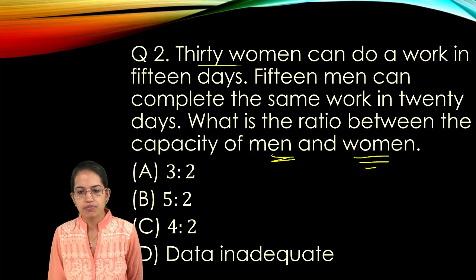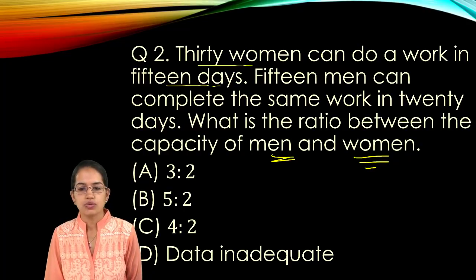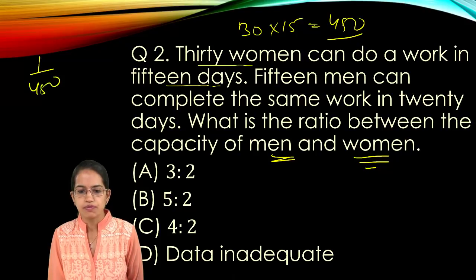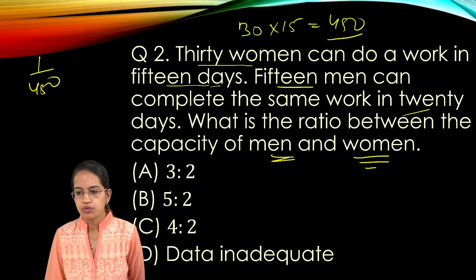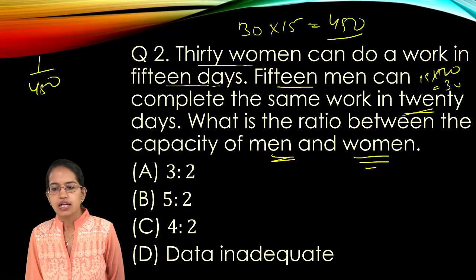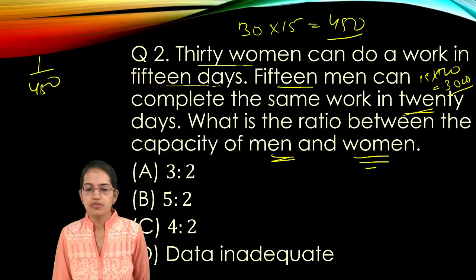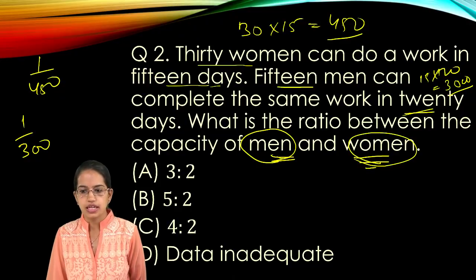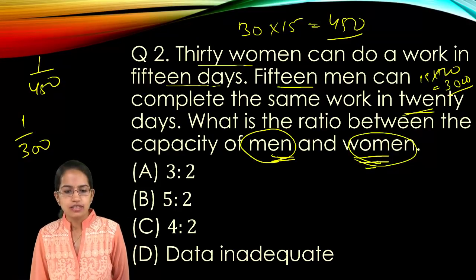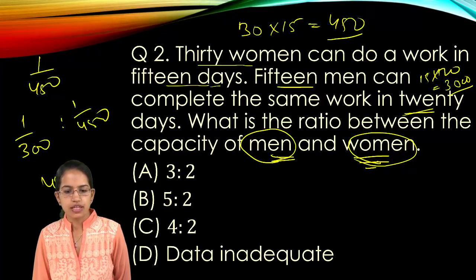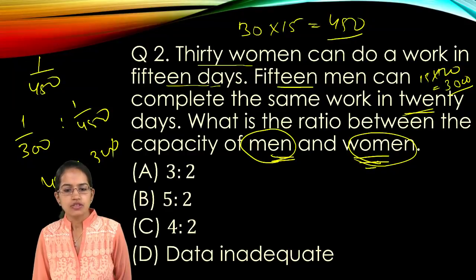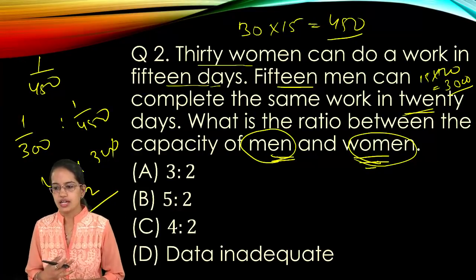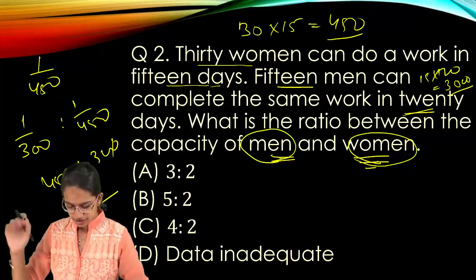It's a very simple problem. 30 women can do work in 15 days, so the total work done would be 30 into 15, that is 450. So in one day, how much work would be done? 1 by 450. However, 15 men can do the work in 20 days, so the total work done would be 15 into 20. The work is 300. Work done in one day would be 1 by 300. We have to find the ratio between men and women. So 1 is to 300 is to 1 is to 450, that is 450 is to 300, cancel 150, so 3 is to 2. So 3 is to 2 would be your right answer.